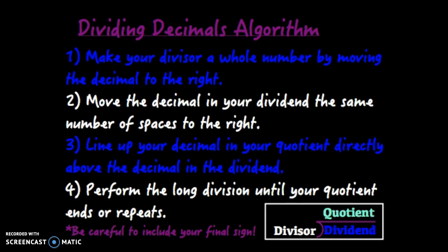So here's a lot of steps for dividing decimals. The first thing you want to do is make your divisor a whole number by moving the decimal to the right. So I gave a little graphic there so the divisor is the number that you're dividing into the other number. Then move the decimal in your dividend, which is the number that's being divided, the same number of spaces to the right.